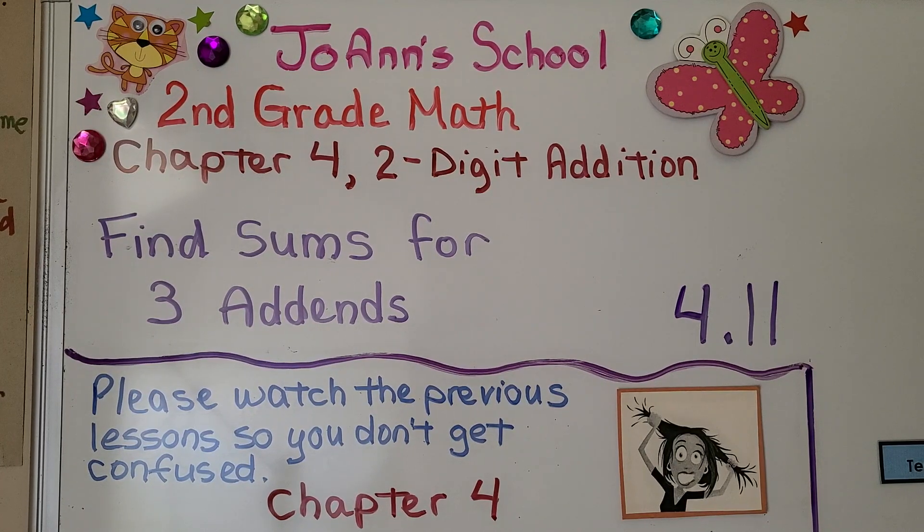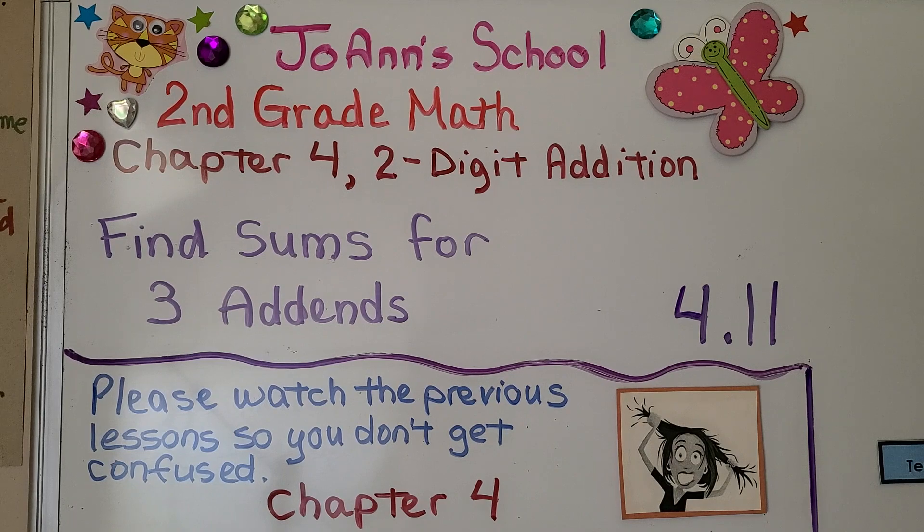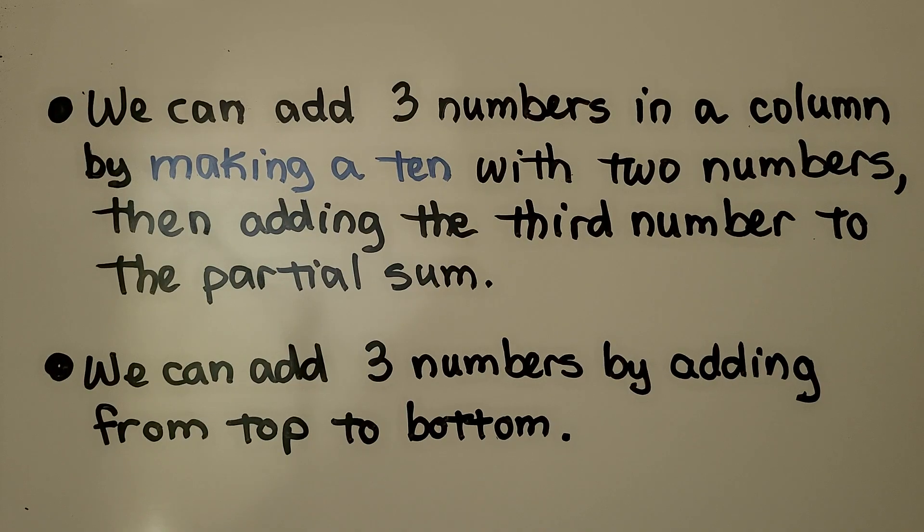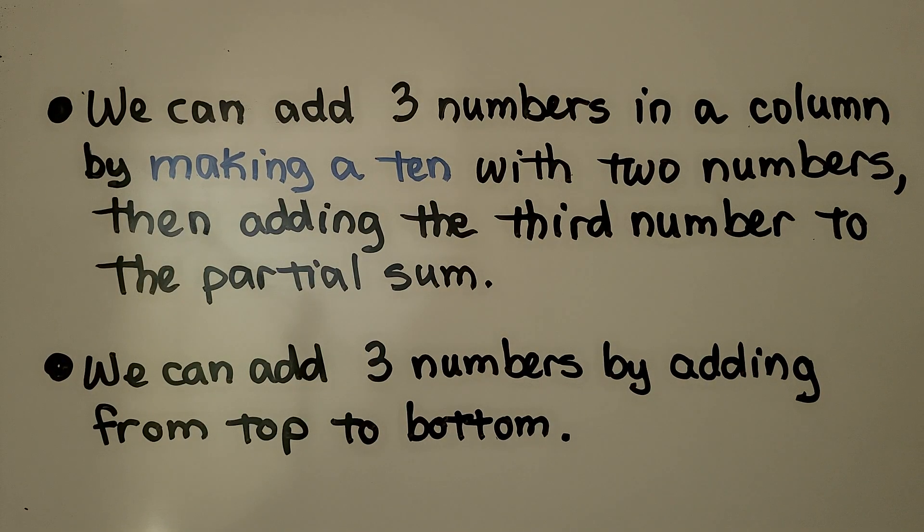Lesson 4.11, find sums for 3 addends. We can add 3 numbers in a column by making a 10 with 2 numbers, then adding the third number to the partial sum. We can add 3 numbers by adding from top to bottom.